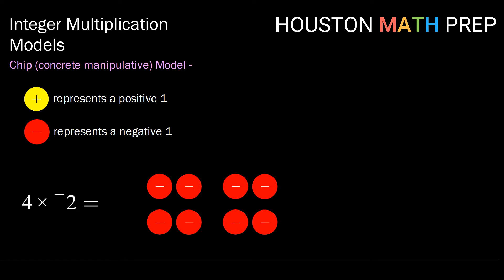Now we can look at how many of what type of chip we have in the end. If we count them up, we have 8 negative chips. So 4 times negative 2 would be negative 8.